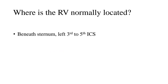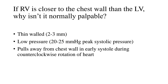The right ventricle is often ignored, so let's give it some attention. The RV is located beneath the sternum, between the left third to fifth intercostal spaces. If the RV is closer to the chest wall than the LV, why isn't it normally palpable? The right ventricle is thin-walled — only 2 to 3 millimeters thick — with low pressure; peak systolic pressure is only 20 to 25 mmHg. Most importantly, in complete opposition to the LV, the RV actually pulls away from the chest wall in early systole during the counterclockwise rotation of the heart. So it is small, low-pressure, and moves away from the chest wall.